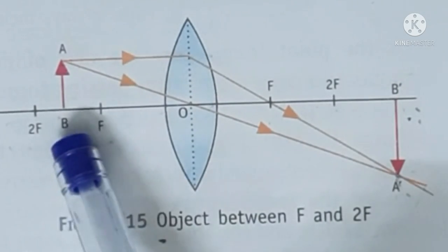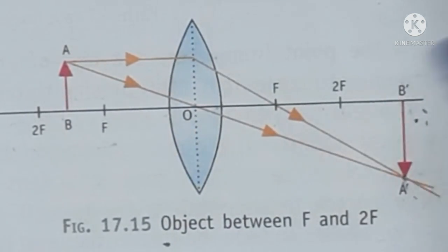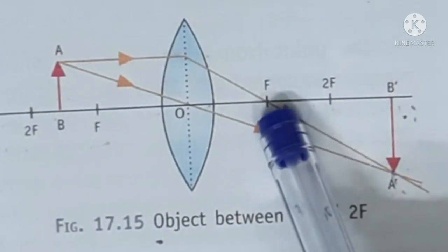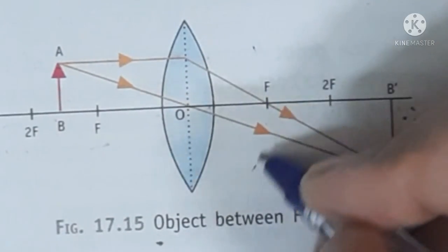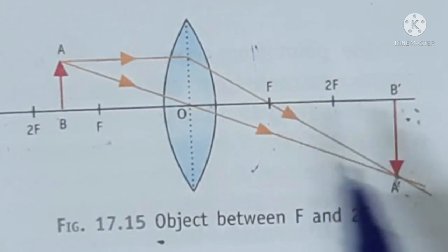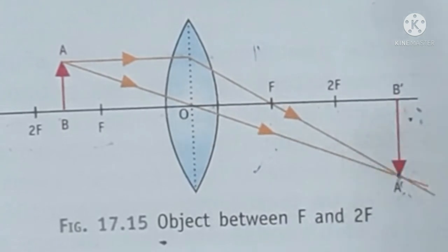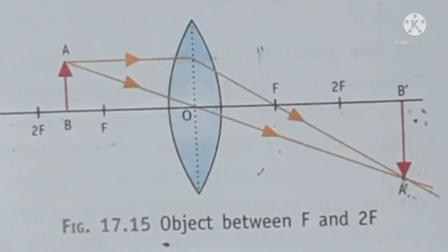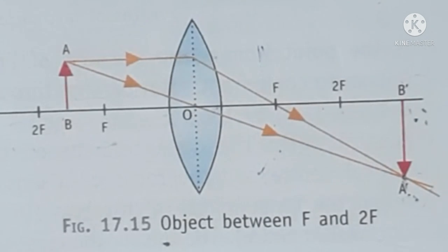Toh is case mein — agar object ko lens ke thoda paas le aaye hain, toh object aur lens ke beech ki distance ko reduce kar diya hai. Toh us case mein kiya ho raha hai ki light rays iske through pass kar rahi hai. Agar focus pe humne retina liya hai, toh light rays ko yahaan pe meet karna chahiye retina pe, but they are not meeting here — they are meeting behind the retina. Toh agar light rays retina pe nahi meet kar rahi hai toh image jo hai retina pe form nahi hogi — kahan image form hogi? Behind the retina. Aur agar aapke retina ke pichhe image form ho rahi hai, toh kya aap us object ko clearly dekh paoge? Nahi dekh paoge.